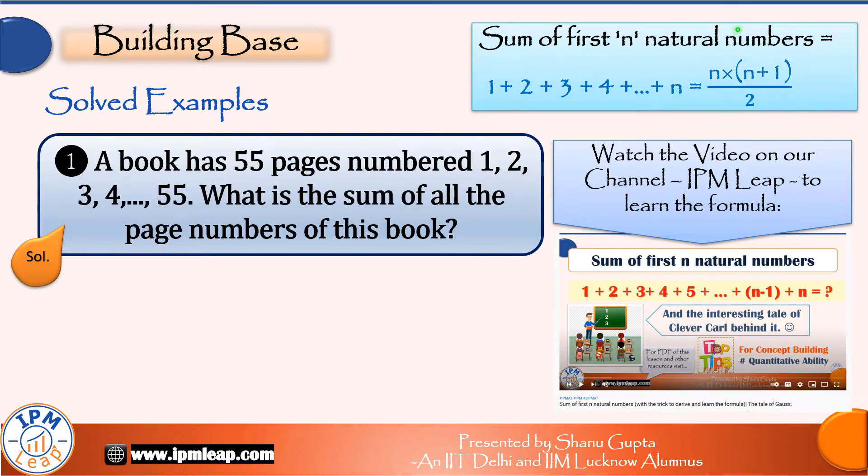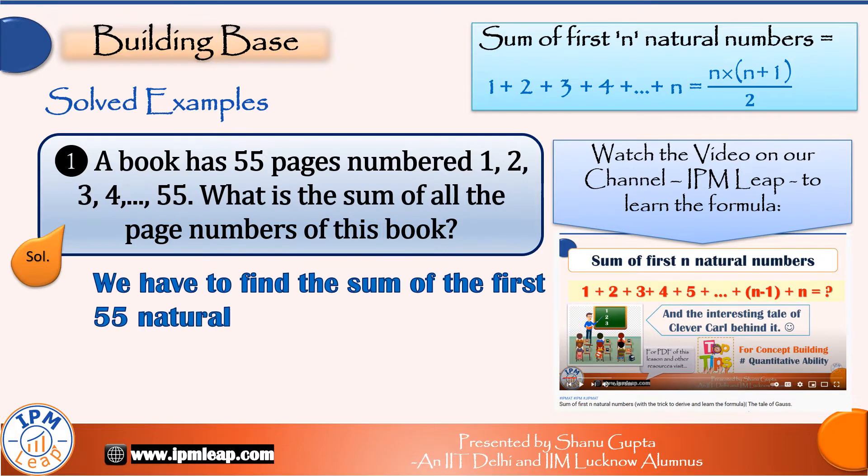To learn this formula, you may watch this video of ours that we have dedicated purely to the discussion of this formula. So back to this question, we have to find the sum of first 55 natural numbers using the formula given above: 55 × 56 / 2 = 1540. So the sum of all page numbers of this book is 1540.